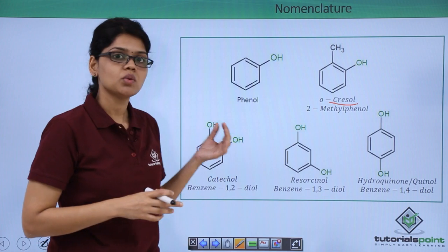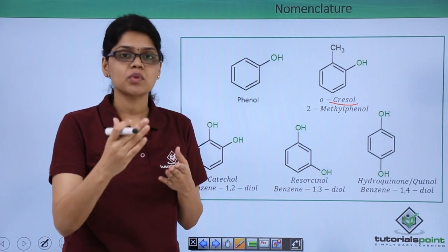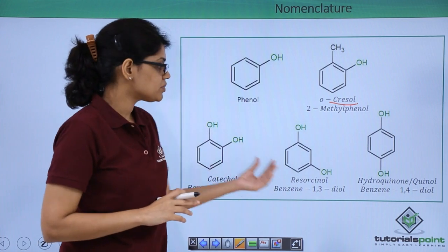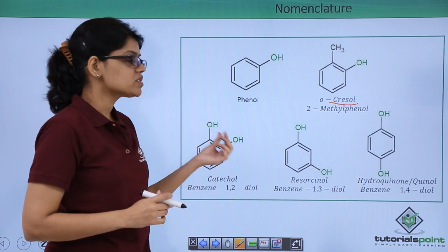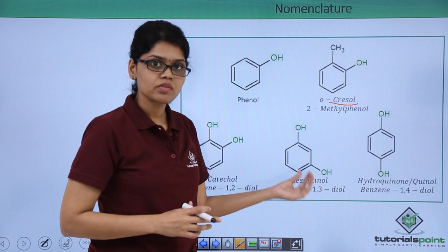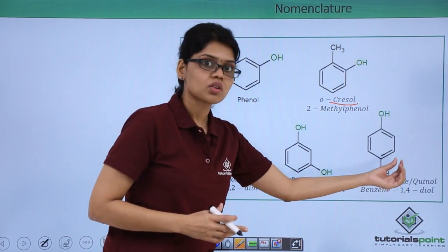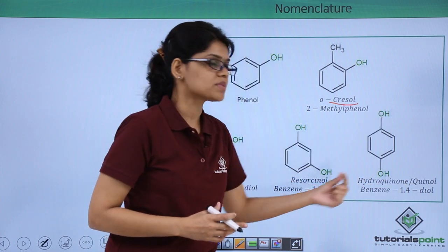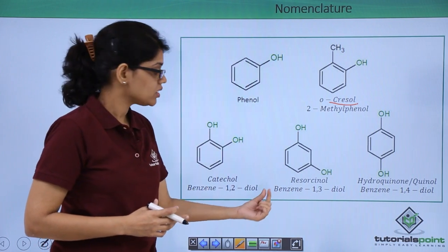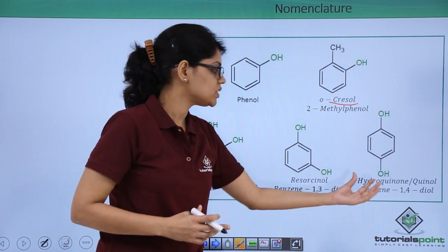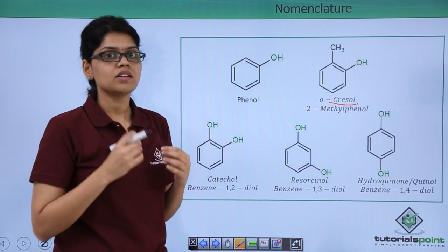When two OH groups are attached to a benzene ring, depending on the relative positions of these OH groups, we have different common names. In catechol, the OH groups are ortho to each other; in resorcinol, the OH groups are meta to each other; and in hydroquinone, the OH groups are para to each other. The IUPAC names are simply benzene-1,2-diol, benzene-1,3-diol, and benzene-1,4-diol.